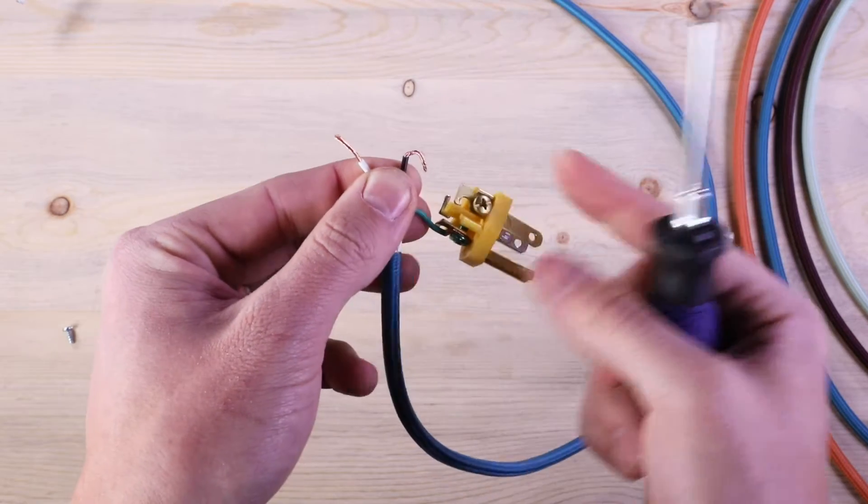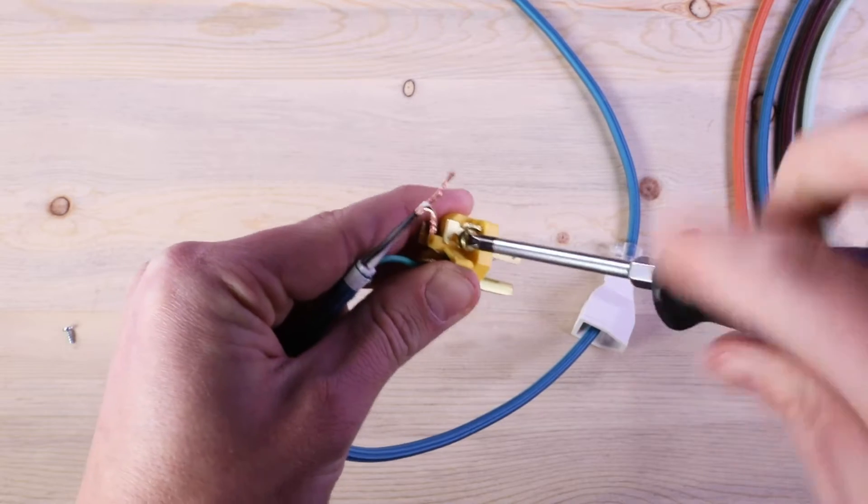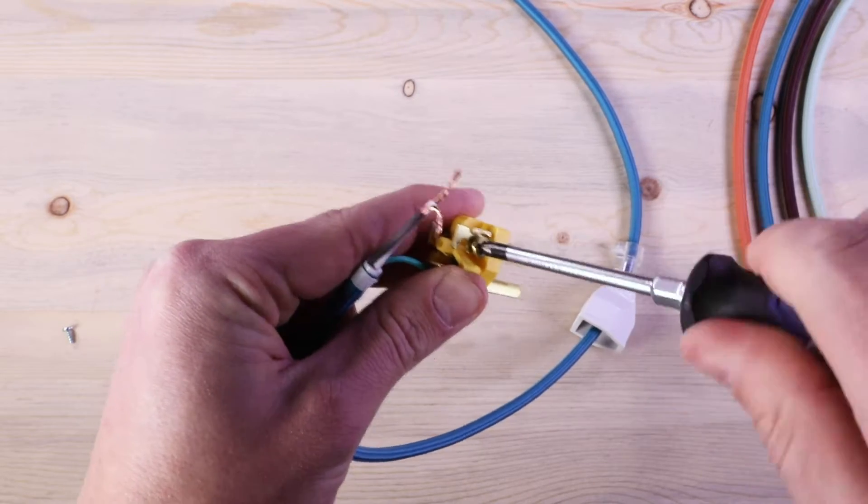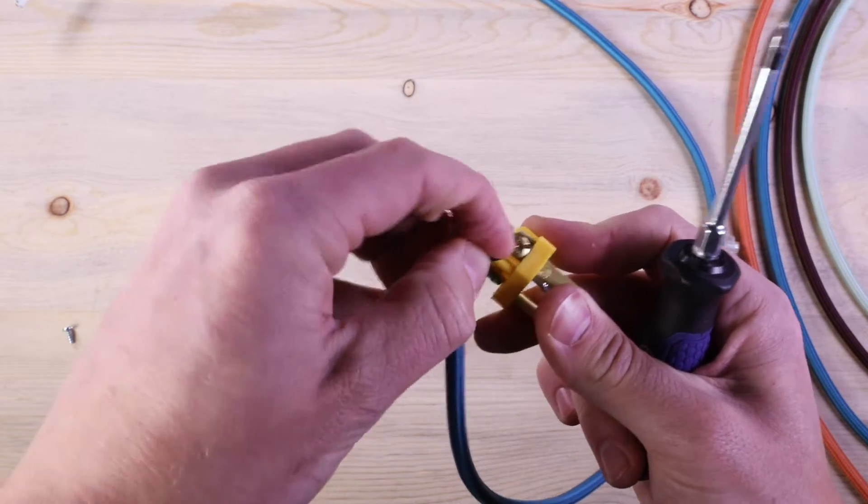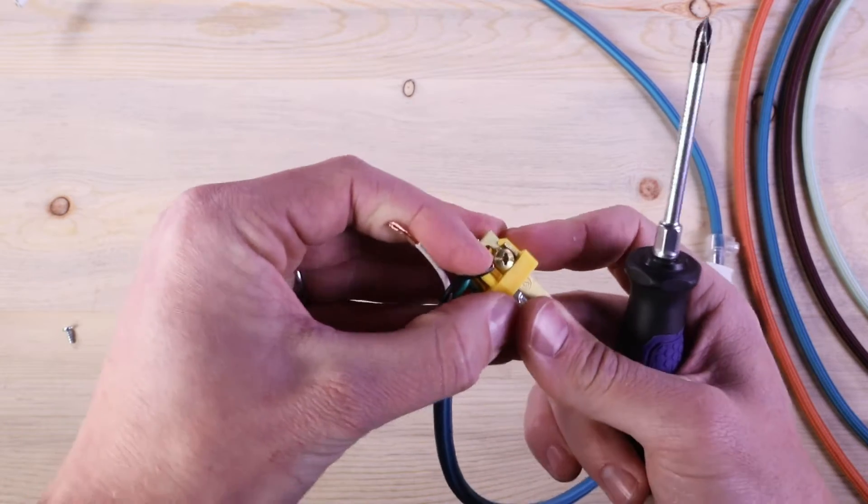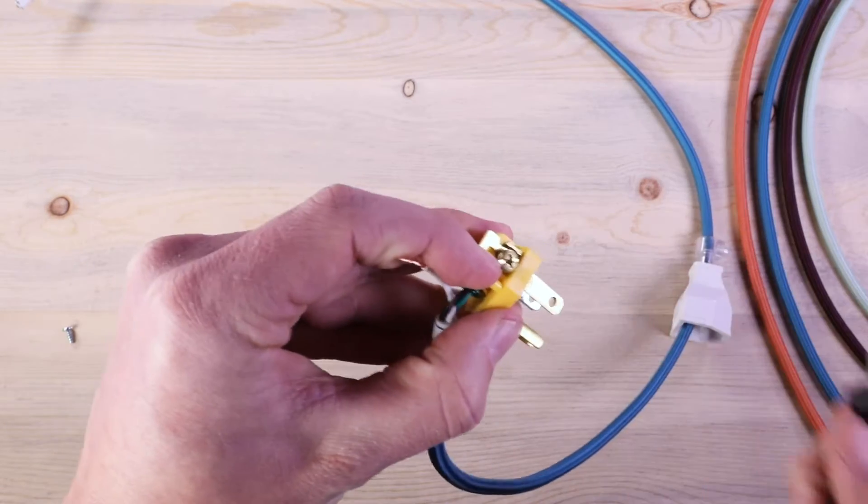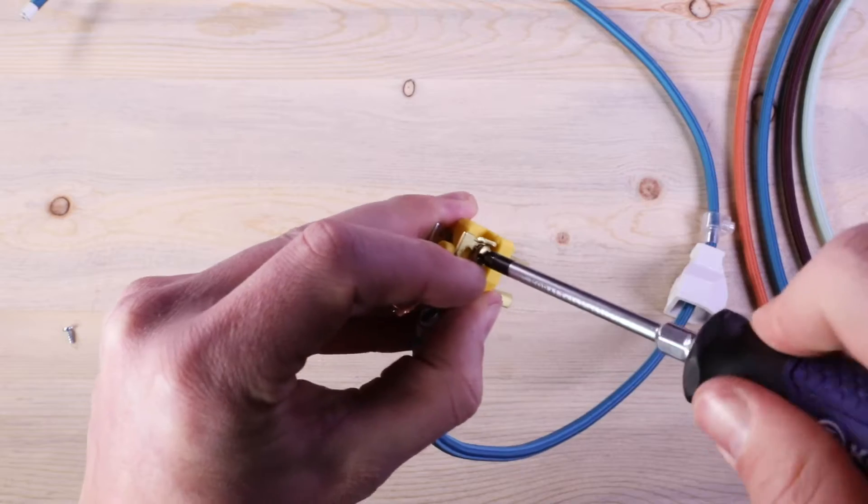Next, we'll repeat this process with the black positive wire. The black positive wire goes to the gold terminal, which is the plug blade that goes into the right-hand slot of the wall outlet. And just like the ground wire, secure the copper-stranded wire under the screw as well as the strain relief hook.